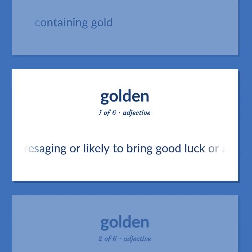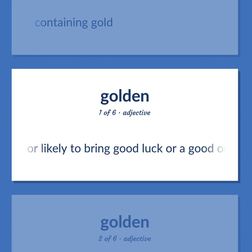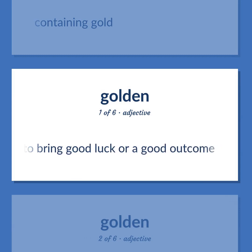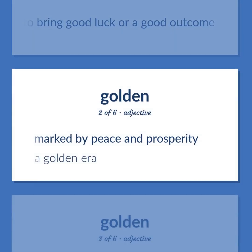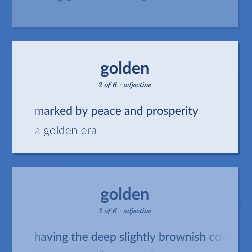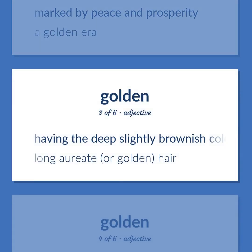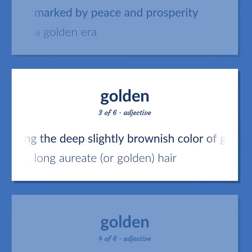Aurous: containing gold. Golden (sense 1): presaging or likely to bring good luck or a good outcome. Golden (sense 2): marked by peace and prosperity — a golden era. Golden (sense 3): having the deep slightly brownish color of gold.